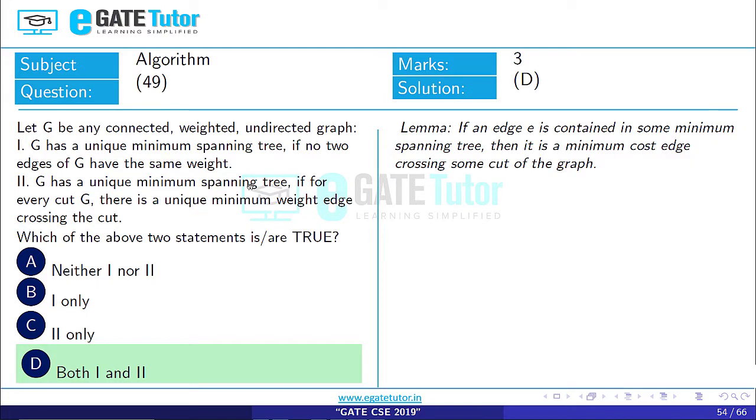Lemma says that if an edge is contained in some minimum spanning tree, then it is a minimum cost edge crossing some cut of the graph. Lemma says that if there is an edge between the vertices V1 and V2, then this edge is the smallest edge between the two vertices.